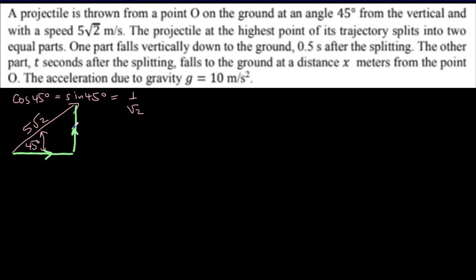Vertical component will equal the hypotenuse times the sine of 45 degrees. √2s will cancel out, and we'll just get 5 meters per second. And because it is 45 degrees, these two components need to be equal.